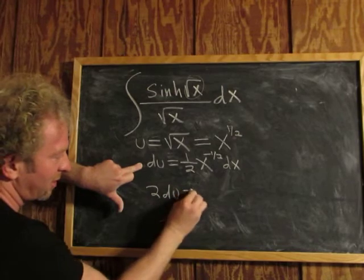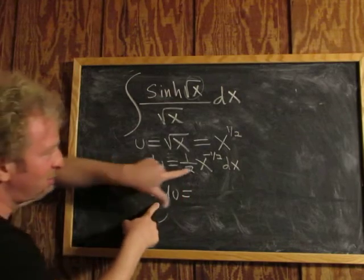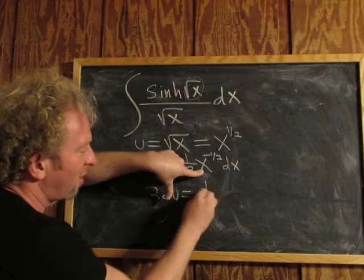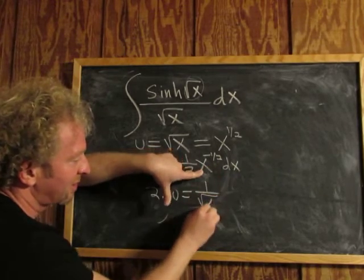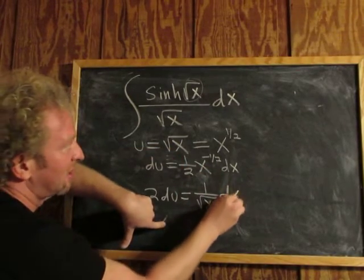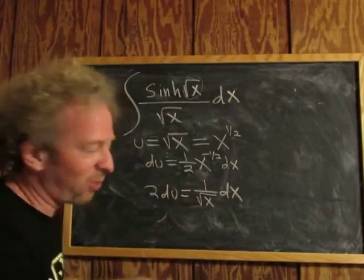Let's just do it the way the pros do it. Multiply by 2, you get 2 du. Bring this guy downstairs. You get 1 over, well, x to the one-half becomes the square root of x dx. That's the way the pros do it, all at once.